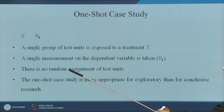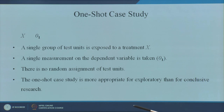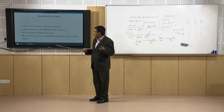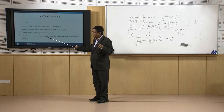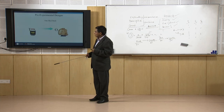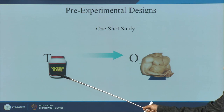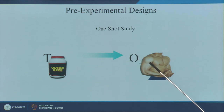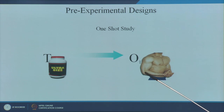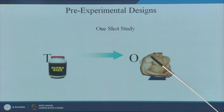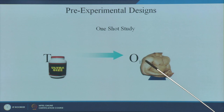The one-shot case study is more appropriate for exploratory research, but it has limitations. The treatment is given — a protein powder — and the health or muscle quality of the person is measured. There is no pre-test, so we cannot compare before and after.